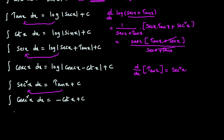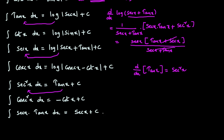Another two easy formulas are there. Integral of secant x into tan x dx — from the differentiation chapter, the derivative of secant x is secant x into tan x. That's why integral of secant x into tan x dx is secant x plus c.